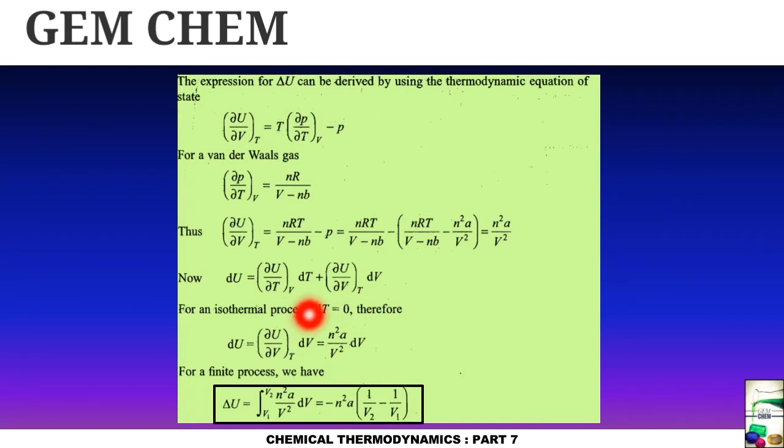And for a finite process, if we integrate it, and in the right hand side if we integrate over V2 to V1, then we can get delta U equals to minus n square a, 1 by V2 minus 1 by V1. Now let us go to the next part.